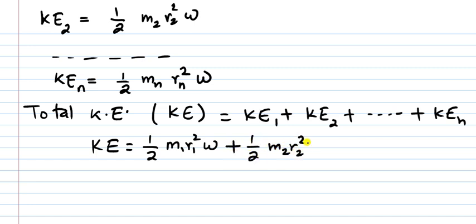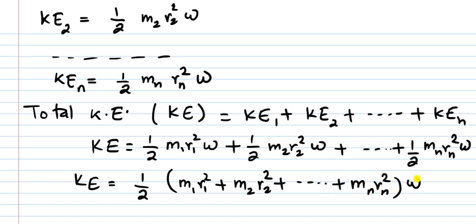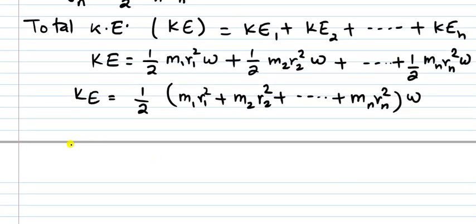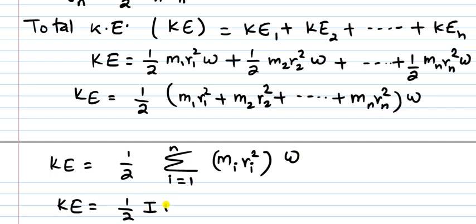Expanding the total kinetic energy: KE equals one-half times (m1·r1² + m2·r2² + ... + mn·rn²) times omega². This can be written using summation notation as one-half times the sum from i=1 to n of (mi·ri²) times omega². Recognizing that the summation equals the moment of inertia I, we get KE equals one-half I·omega². This is the kinetic energy of a body in rotational motion.